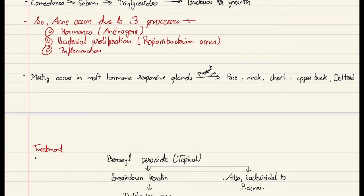Mostly, the acne occurs in the most hormone-responsive glands that are present on the face, neck, chest, upper back, and deltoid. This explains the reason why acnes are mostly seen in this part of the body.